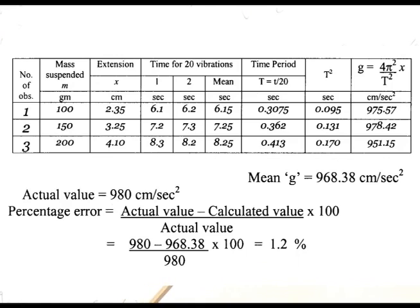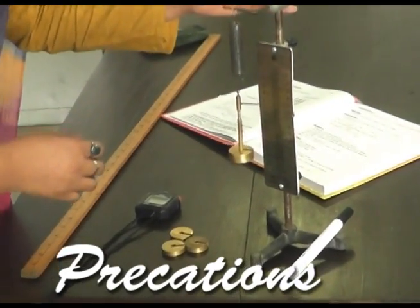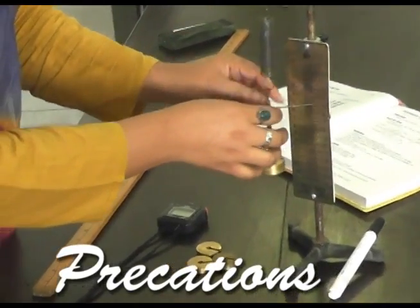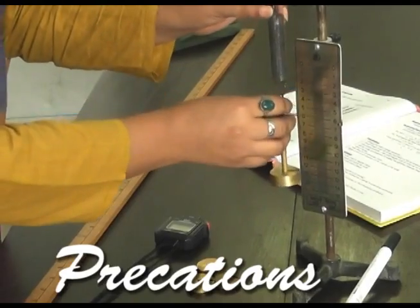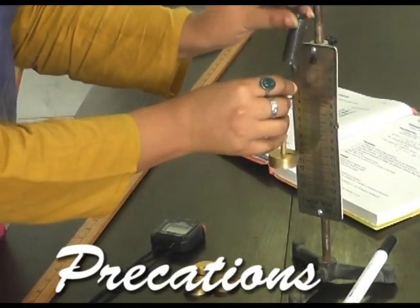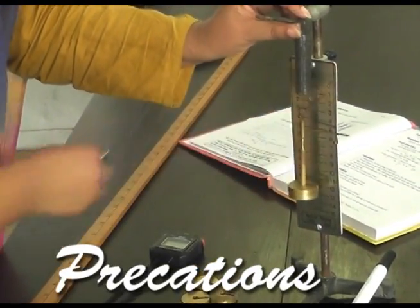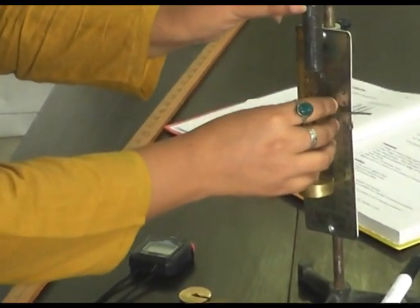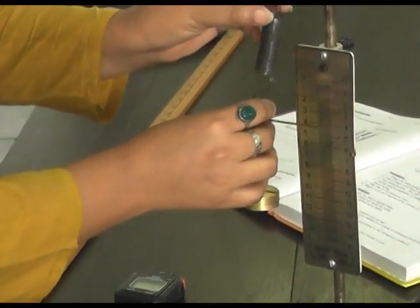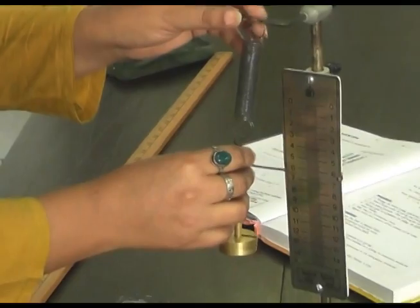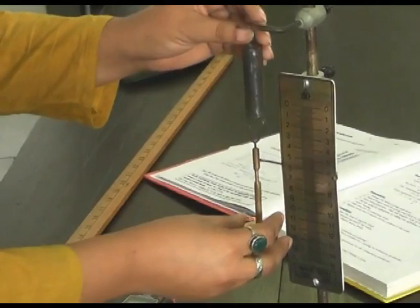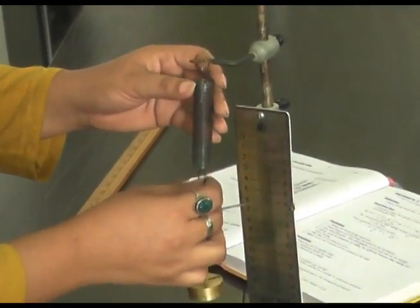After completing our procedure, we will take the percentage error. After avoiding mishandling of the apparatus: first one is this, the pointer should not touch the meter rod. This is a very wrong procedure to perform the experiment. You should not hang the hanger in this way. Second one, the pointer should not be much far away from the meter rod that you cannot observe the reading properly. Third, the spring must be free to move.